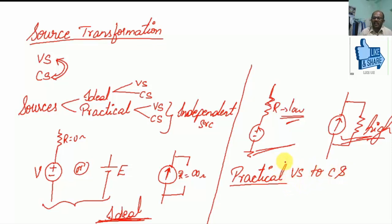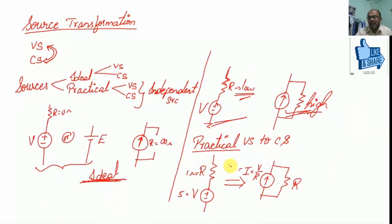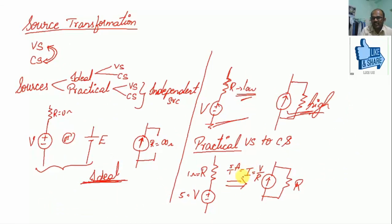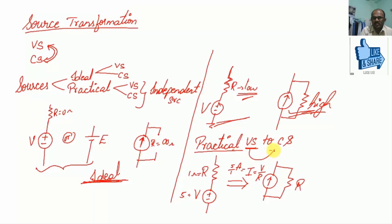Now let's talk about conversion. To convert a practical voltage source to a practical current source, the current source value I is given by V divided by R, where V is the voltage source value and R is the series resistance.